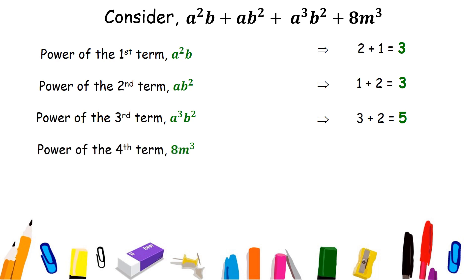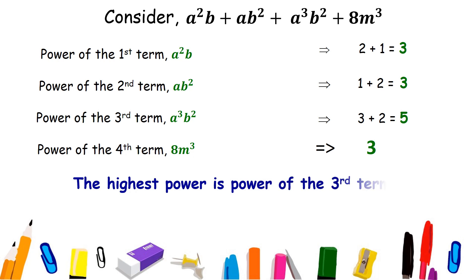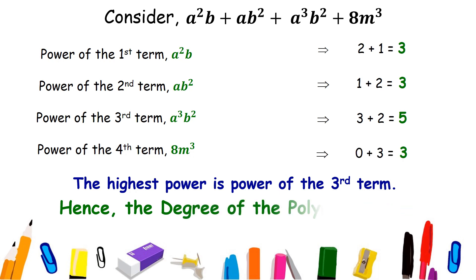In the fourth term, there is only one variable m and its power is 3. So, in this, the highest power is the power of the third term. Hence, the degree of this polynomial is 5.